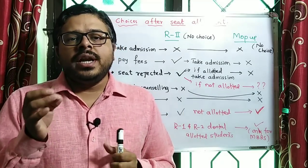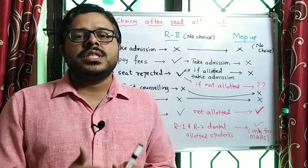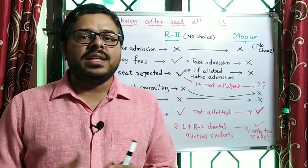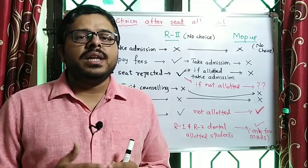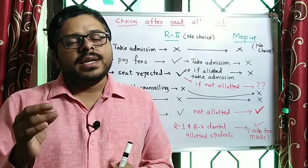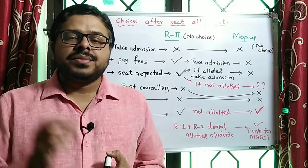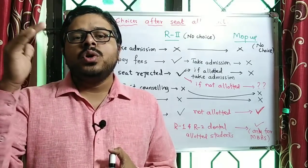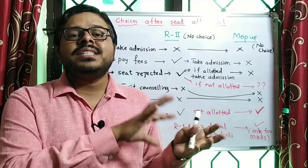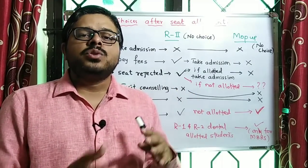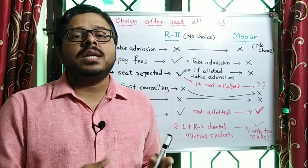Already in option entry mode, one list of colleges is ready. In option entry mode, you can do the correct option entry. At the end of the day, we will have a mock allotment. In the mock allotment, you will have to change the option entry. After that, you can change that particular college.